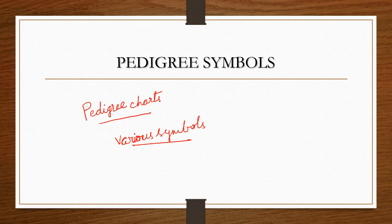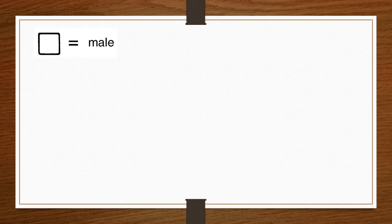In this slide we will learn about symbols used for males. In a pedigree chart, a male is always represented by a square. A square with a number inside represents that number of male individuals.